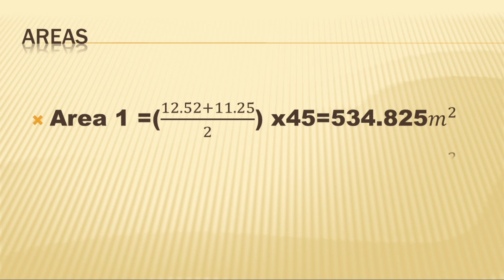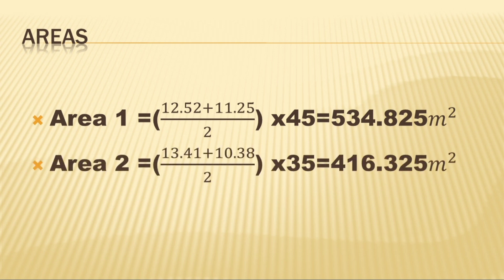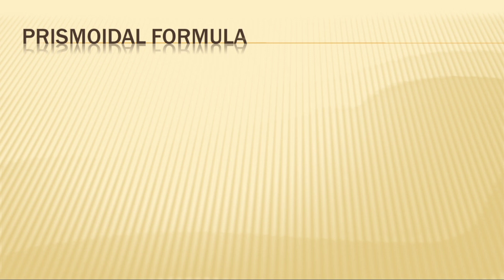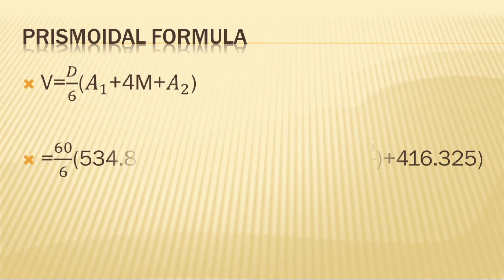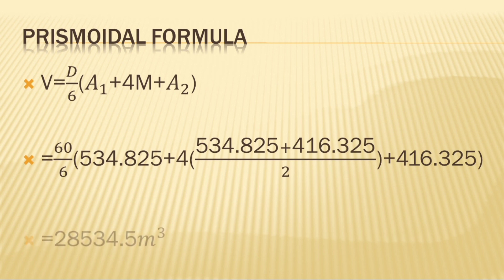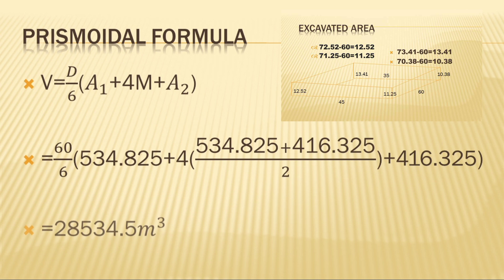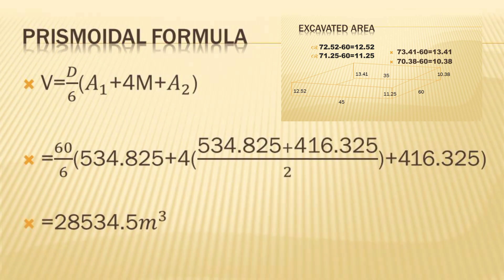Now we find the volume using the prismoidal formula. A prismoid is a solid made up of two end faces which must be parallel plane figures, not necessarily in a familiar shape. The faces between them—the sides, top, and bottom—must be formed by straight continuous lines running from one end to another. I have illustrated this in the diagrams.